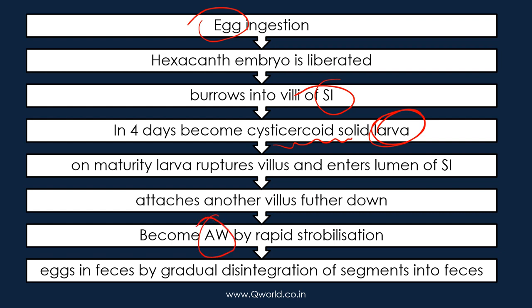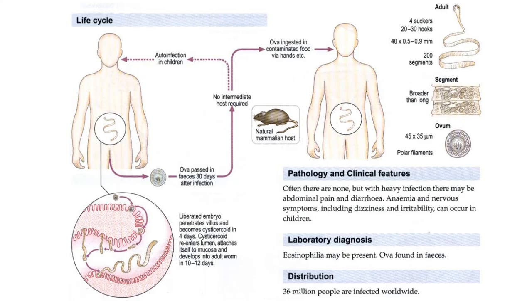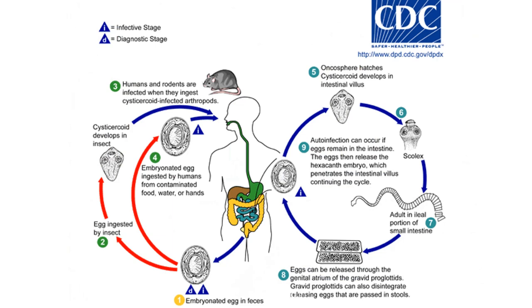The larva develops in the villi of the intestine, ruptures, and attaches to another villus to become the adult worm. All three forms — eggs, larva, and adult worm — are seen in human beings, so there is no requirement of an intermediate host. The eggs are released into feces, which are again ingested, continuing the cycle.